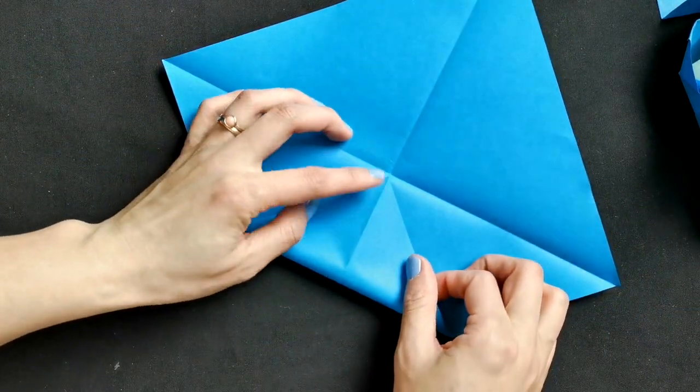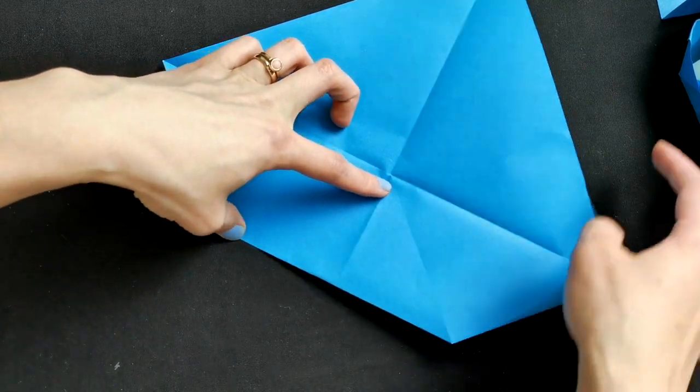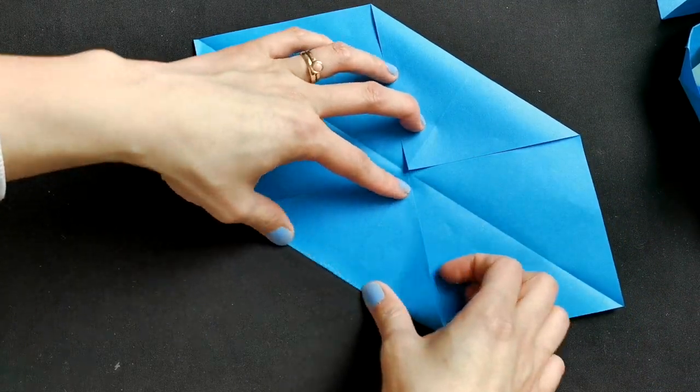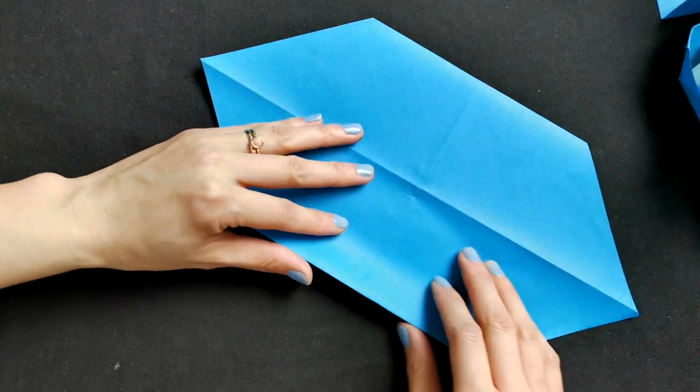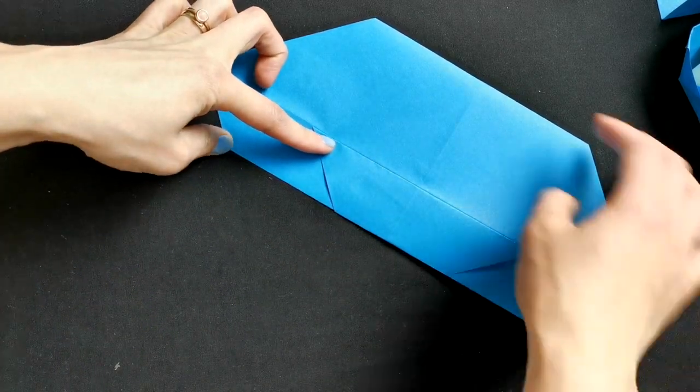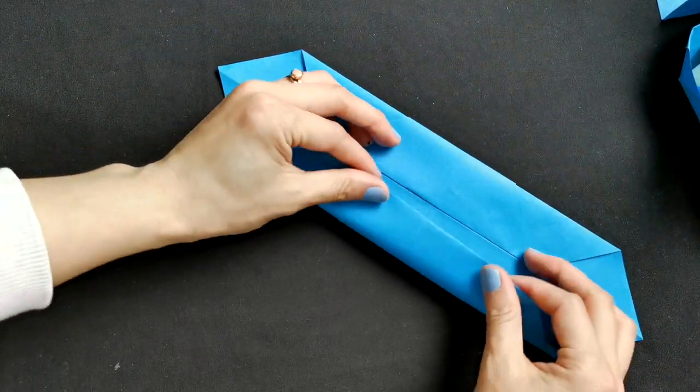Then we open it up again, fold one corner to the middle, another corner to the middle, then we turn around, fold one edge into the middle, another side the same.